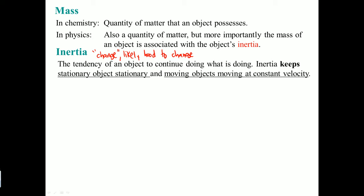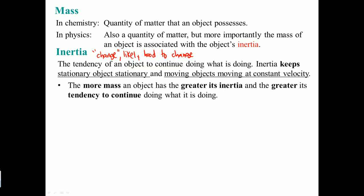Inertia states that it keeps an object stationary if the object is already stationary — if it's at rest, it's going to stay at rest. But if the object is moving at a constant velocity, it's going to stay moving. The more mass an object has, the greater inertia it has. Because it has greater inertia, it has a greater tendency to continue doing what it's doing — it is less likely to change. A big car at rest would require more gas to start moving, and it would require more force to start slowing down. When a big car is going and a wind blows, the car doesn't feel anything because of its inertia.